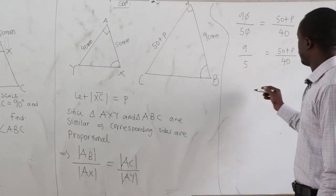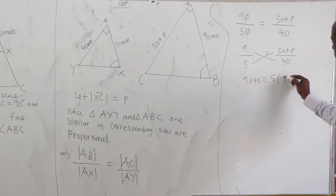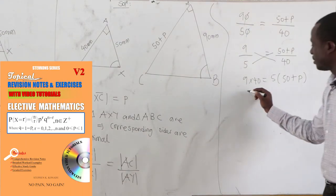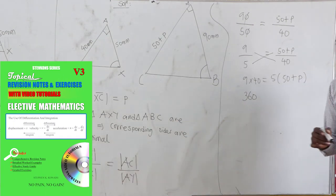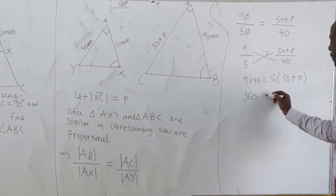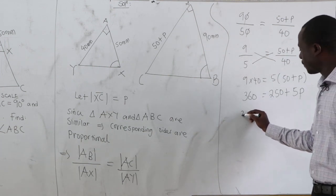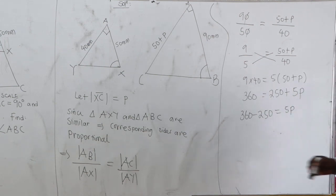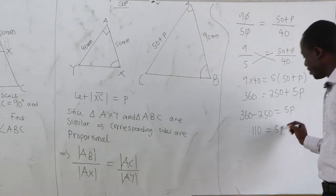Now let's cross multiply. We get 9 times 40 equal to 5 times (50 plus P). So 360 equals 250 plus 5P, using the distributive property. Grouping like terms: 360 minus 250 equals 5P, which gives 110 equal to 5P.